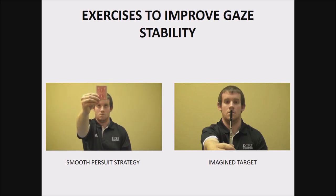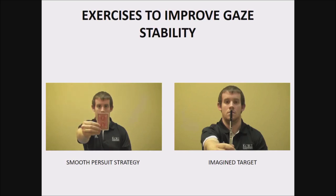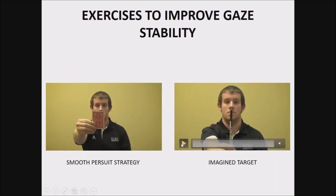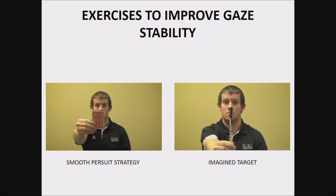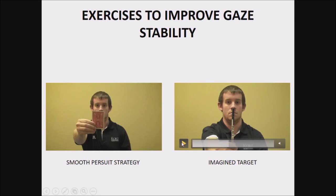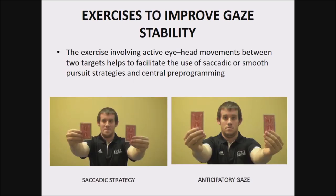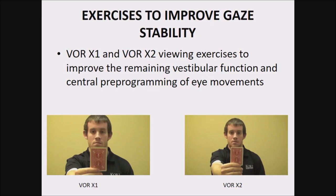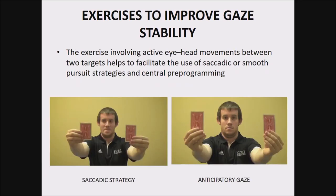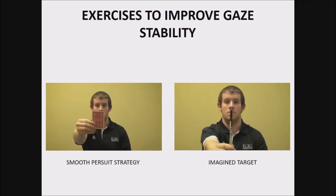The smooth pursuit strategy compensates for VOR loss in certain situations. Then there is the imaginary target exercise: the patient concentrates on an object, turns the head while imagining they are still looking at the same target, then opens their eyes. To summarize the gaze stability exercises: VOR x1, VOR x2, saccadic strategy with anticipatory gaze, smooth pursuit strategy, and imaginary target.